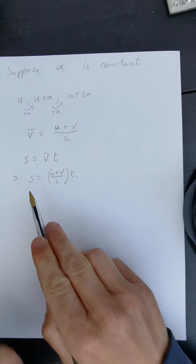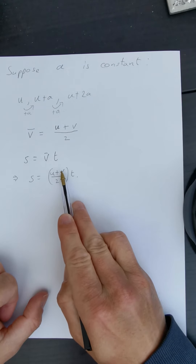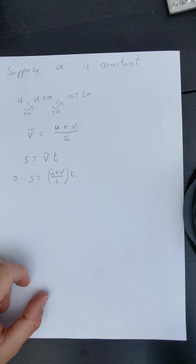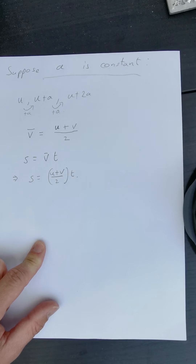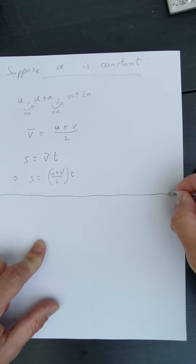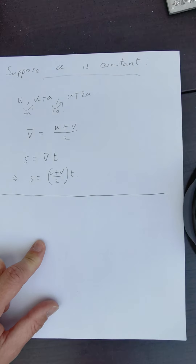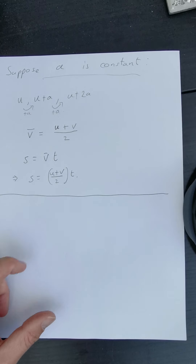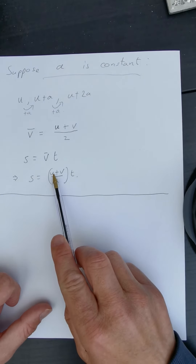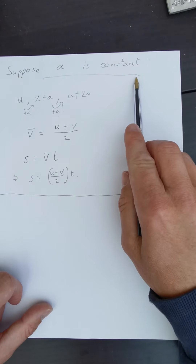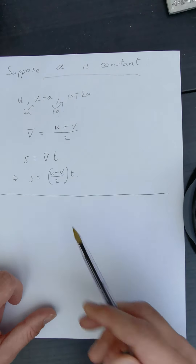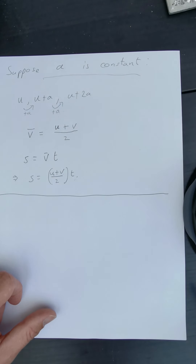That is the first master equation of kinematics: s = (u + v) / 2 × t. In words: displacement equals initial velocity plus final velocity, divided by 2, multiplied by t. Crucially, this only works if the acceleration is constant. If the acceleration is not constant, this equation is not valid.